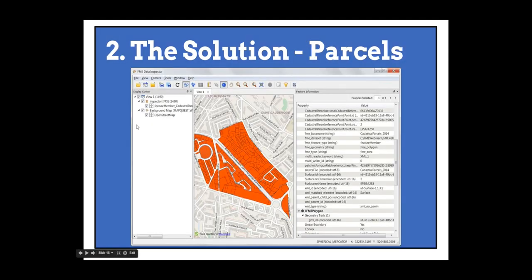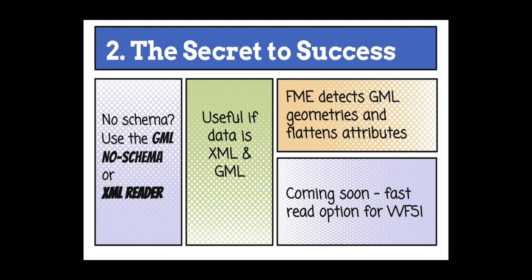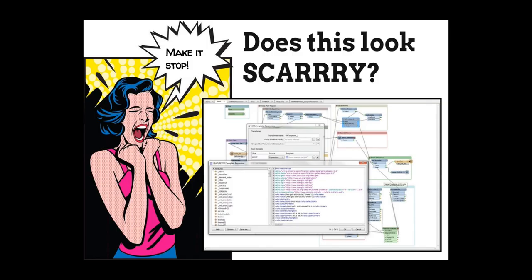Now back to our friend the XML templater. This is what it used to look like when you were trying to write GML — and the important text in red there was quite daunting. Now we're going to make it a lot easier using XSD schema information. If you forget everything else today, my one-liner would be: we're welcoming GML into the family of well-behaved formats. Now you can match the feature type and attributes from GML and XML just like you would any other format — no longer needing my beloved XML templater.